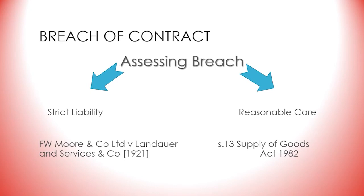A contract can be breached in a variety of ways. First, a party may refuse to perform all or part of the contract — for example, someone refuses to pay for goods received. Secondly, performance may be defective — for example, you order a tablet and it arrives broken. Thirdly, a party may be unable to perform the promised actions — the seller has sold the goods promised to you to somebody else. Note however the requirement that the failure to perform needs to be without a lawful excuse.